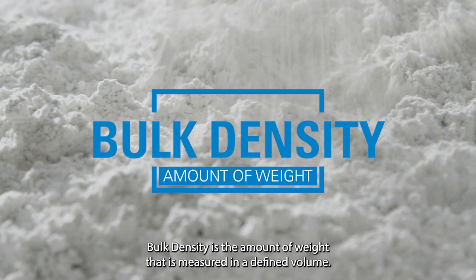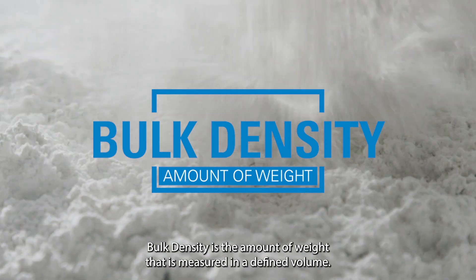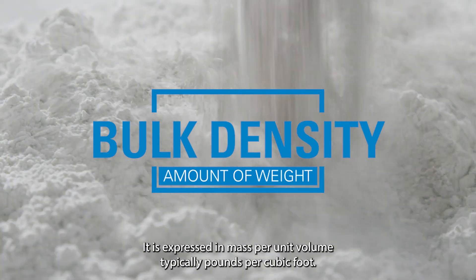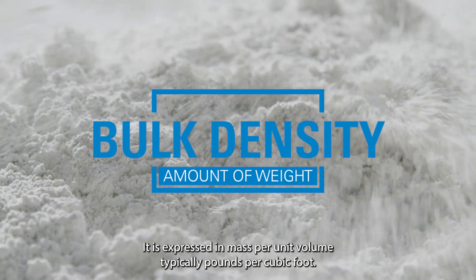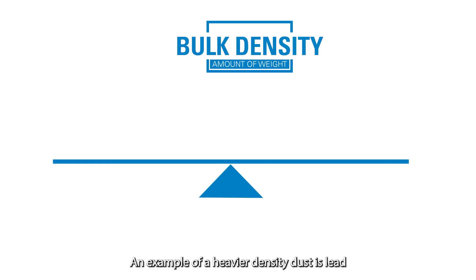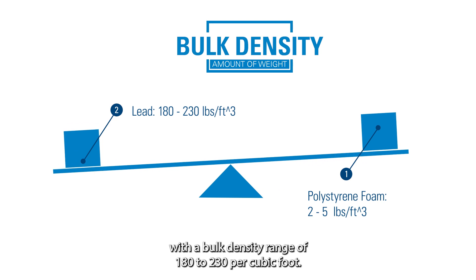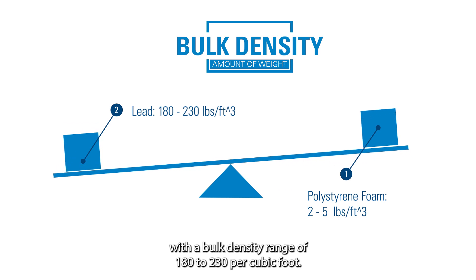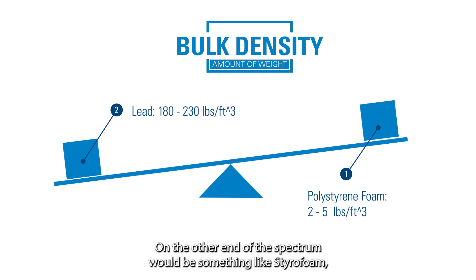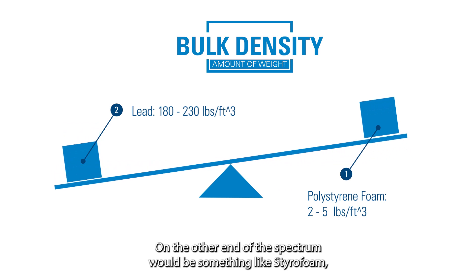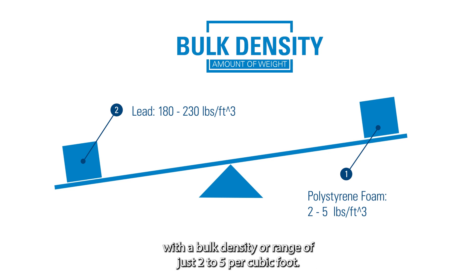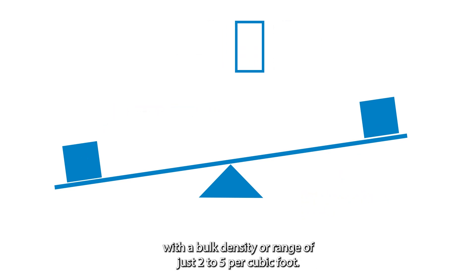Bulk density is the amount of weight measured in a defined volume. It is expressed in mass per unit volume, typically pounds per cubic foot. An example of a heavier density dust is lead, with a bulk density range of 180 to 230 pounds per cubic foot. On the other end of the spectrum would be something like styrofoam, with a bulk density range of just two to five pounds per cubic foot.